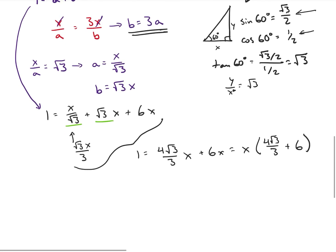And now I'm about ready to solve for my x. So now I know x is going to be equal to 1 divided by 4 root 3 over 3 plus 6. And that's going to be my answer, but obviously it's nicer if we can try to clean this up just a little bit.